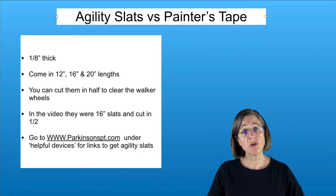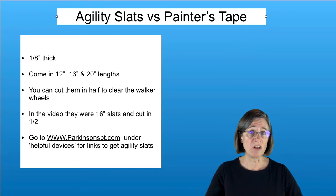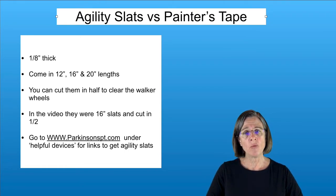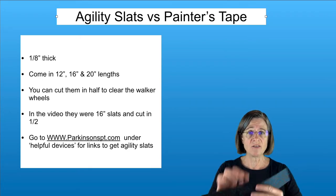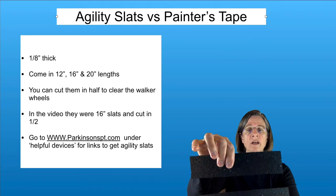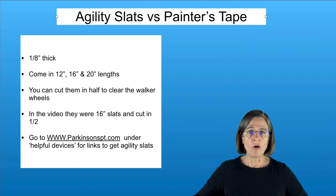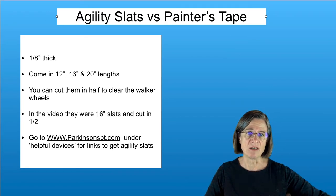There are two things you can use in your home to help you take bigger steps: agility slats or painters tape. The agility slats come in different lengths — 12 inch, 16 inch, or 20 inches. I got the 16-inch ones and cut them in half to get two 8-inch strips. The nice thing is that you're not rolling over the strips with your walker, so they don't become uneven. You can also just pick them up when you're done using them — they're out of the way.